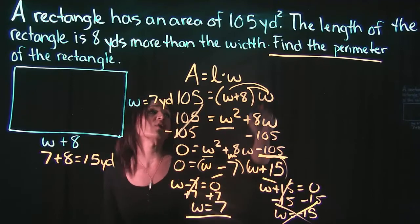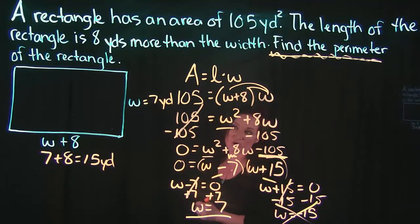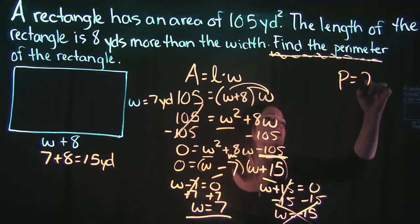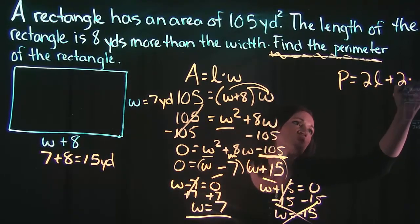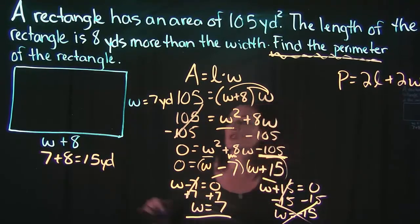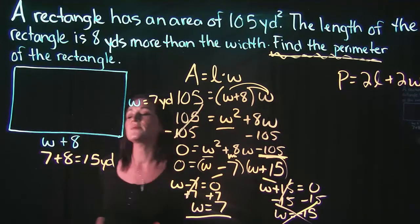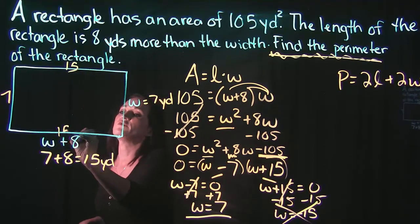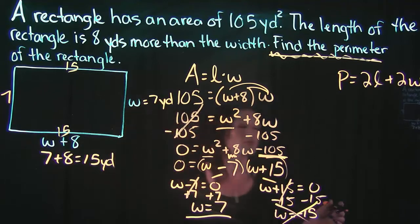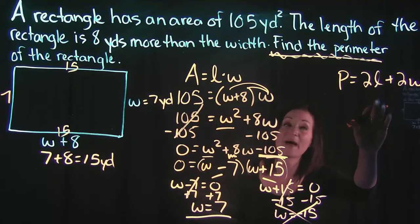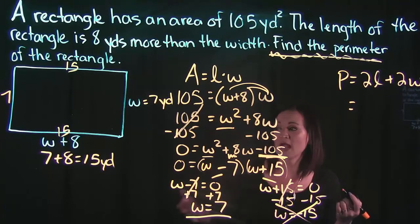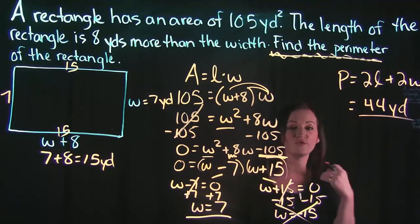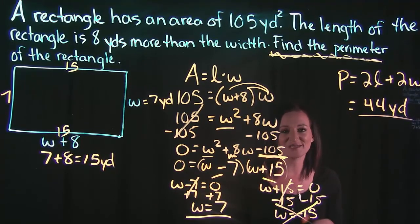Going back to our question, it wants us to find the perimeter of the rectangle, which means we want to add up all sides. There is a formula for perimeter of a rectangle: P equals twice the length plus twice the width. But we also know perimeter is just the distance along all sides. Each width is 7 and each length is 15. You can do 15 plus 7 plus 15 plus 7 or plug it into the perimeter formula. Either way you get the perimeter equals 44 yards for this problem. That's it for this problem.